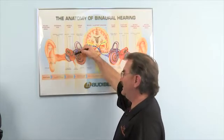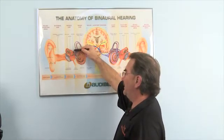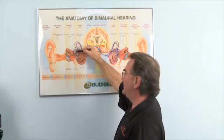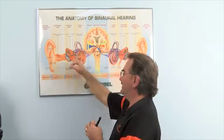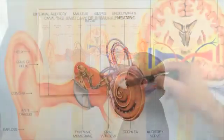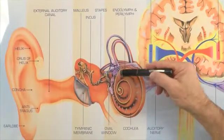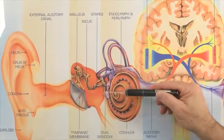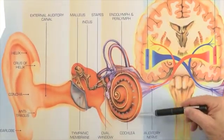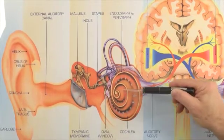As the eardrum vibrates, the malleus bone vibrates, which causes the incus to vibrate, which causes the stapes to vibrate — they act like a tuning fork. That sound then gets sent through a window called your oval window, and as it travels through the oval window, it goes into this snail-like object called your cochlea.